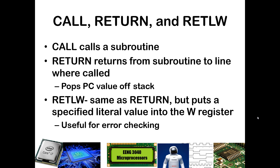For example, if you had a subroutine that was checking to see if a push button was pressed, you could go into that subroutine, do all the control logic to figure out if that button was pressed or not, and then if the button was pressed you might return with literal 1, and if the button was not pressed you might return with literal 0. The value of W in the working register would then tell you whether that button was pressed, based on what happened inside the subroutine.